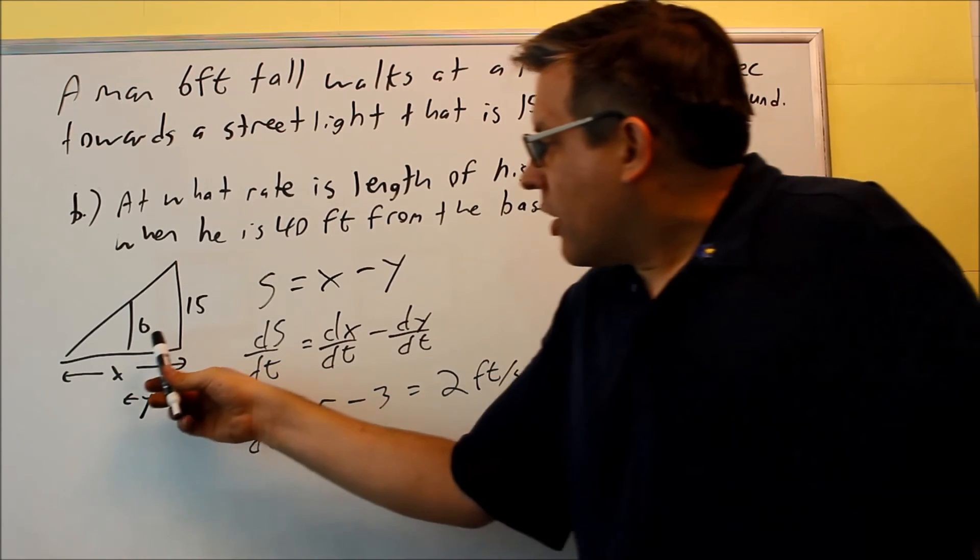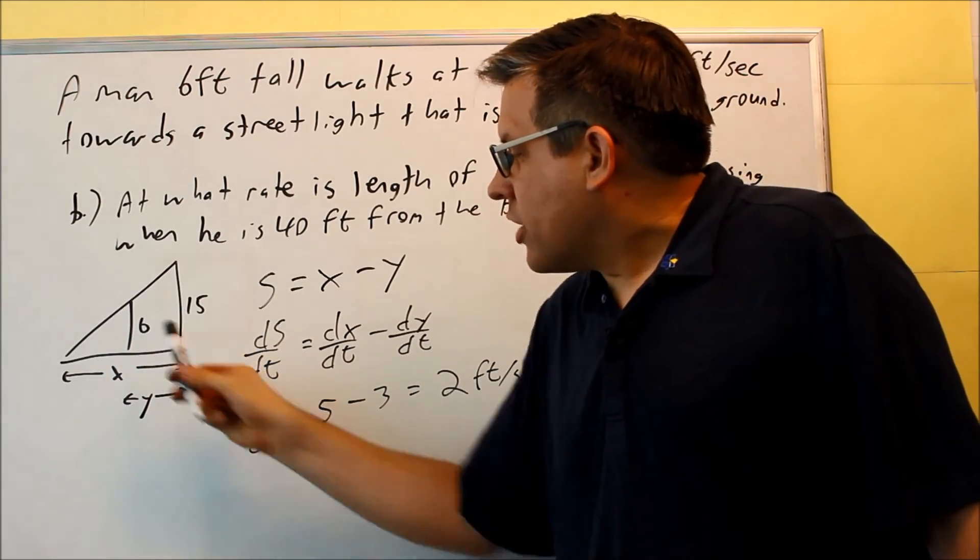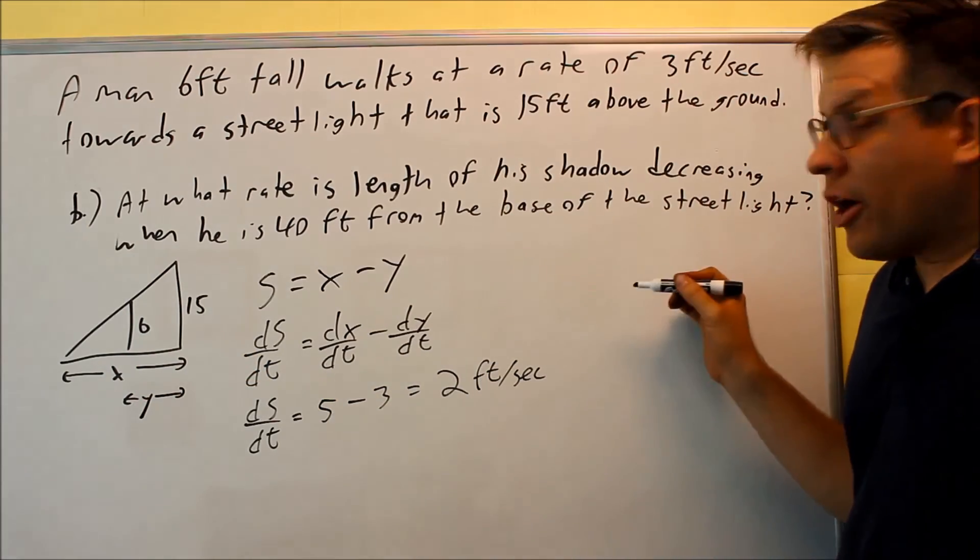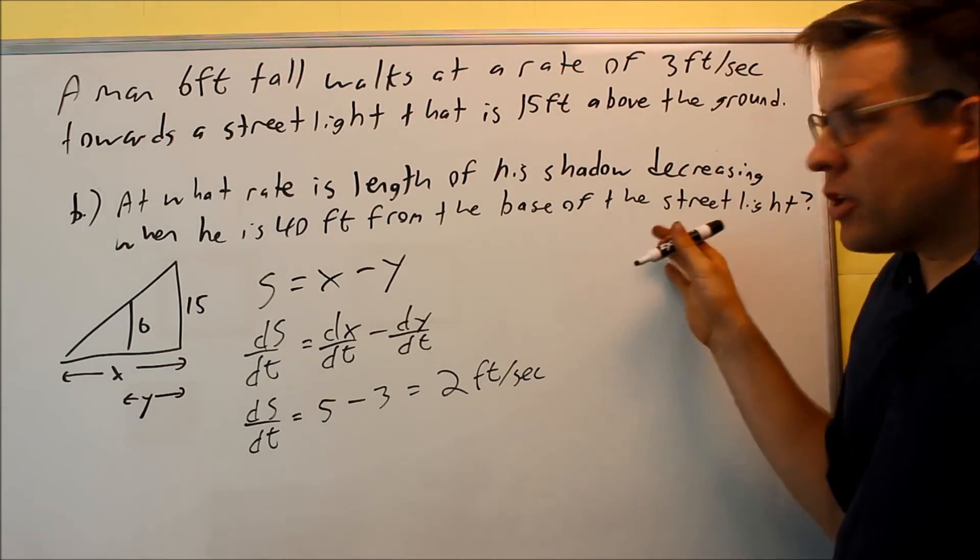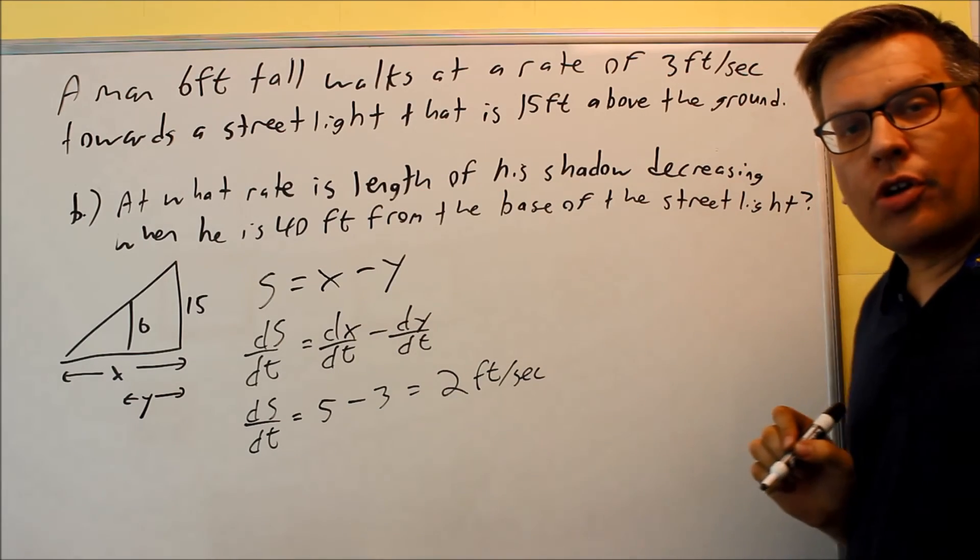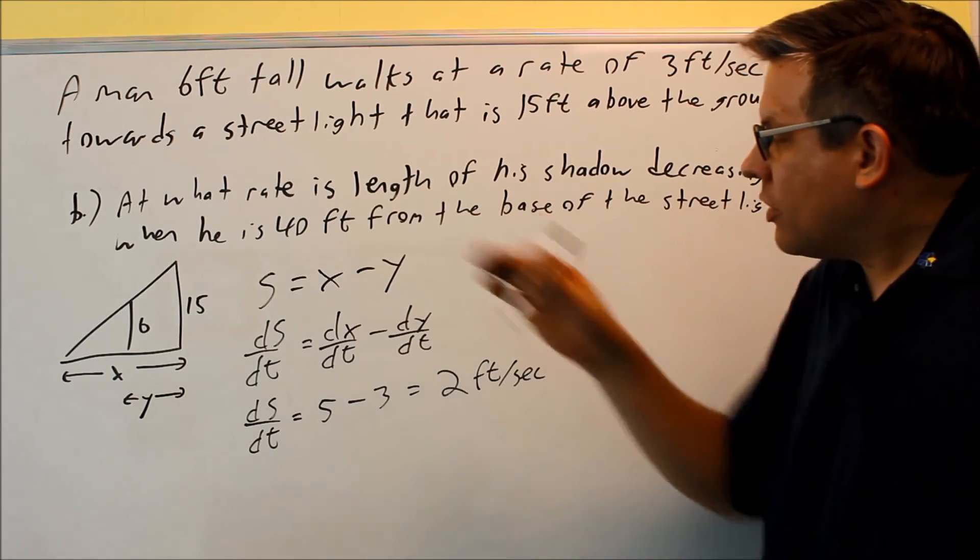Now that makes sense because he's moving towards the street light, so that distance is getting smaller. Now, one thing to mention here is we didn't use the 40 at all, so you might be thinking, well, does that mean anything?